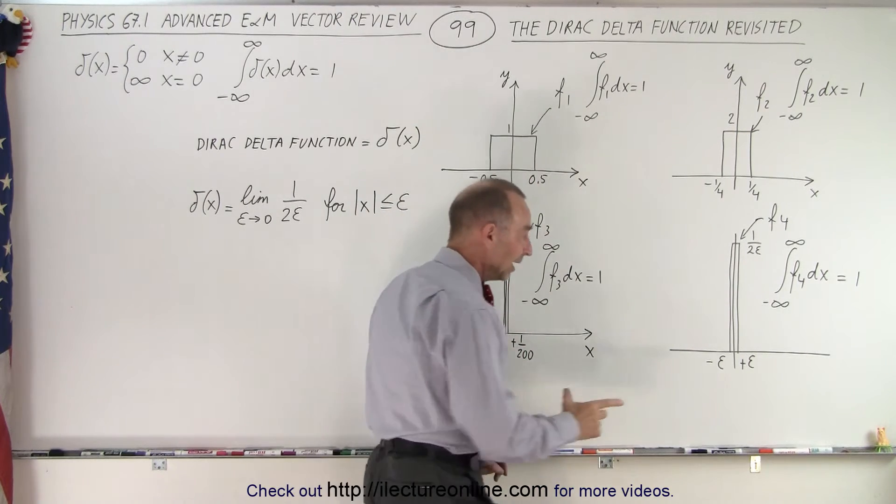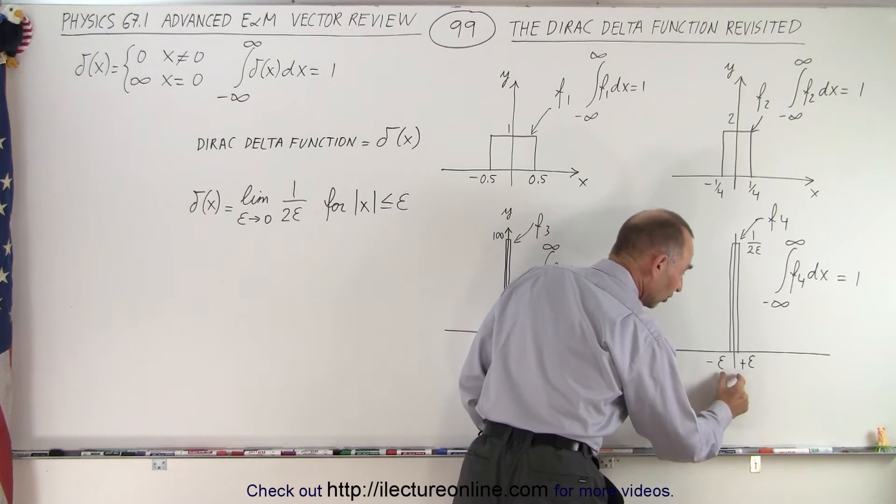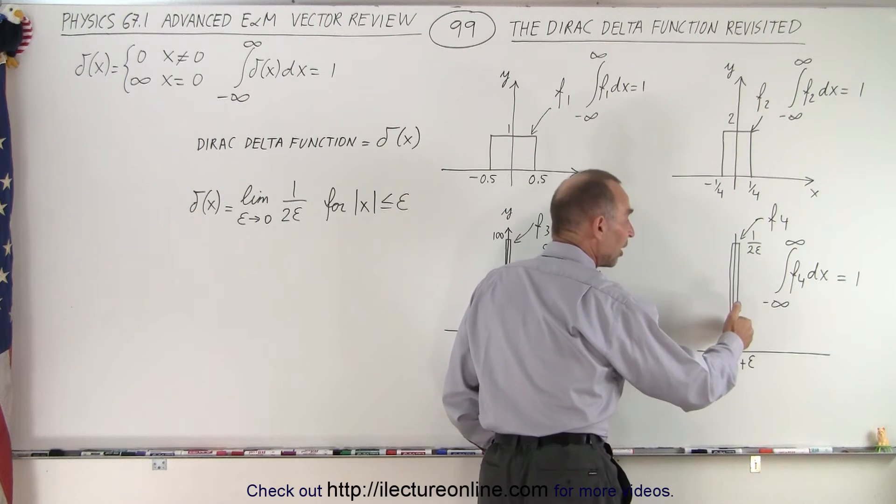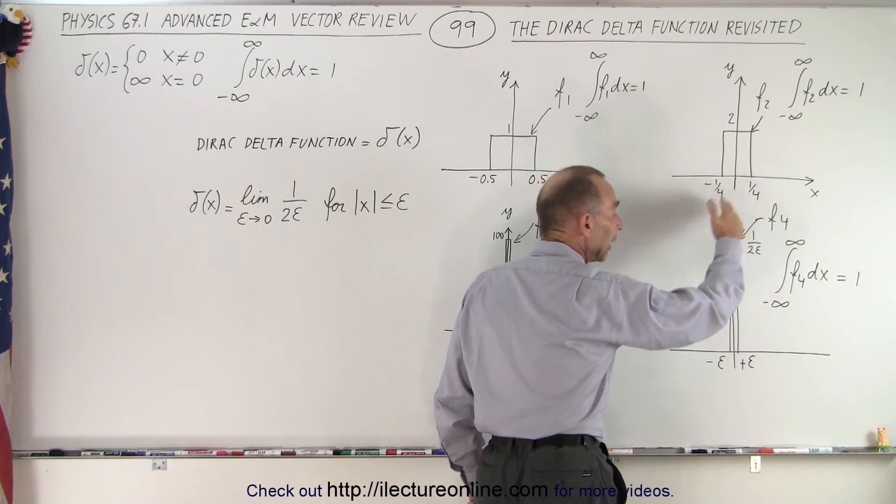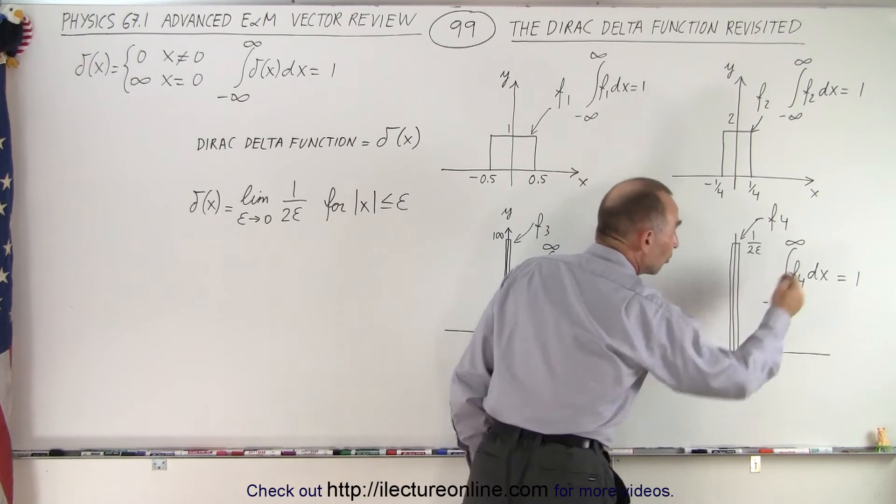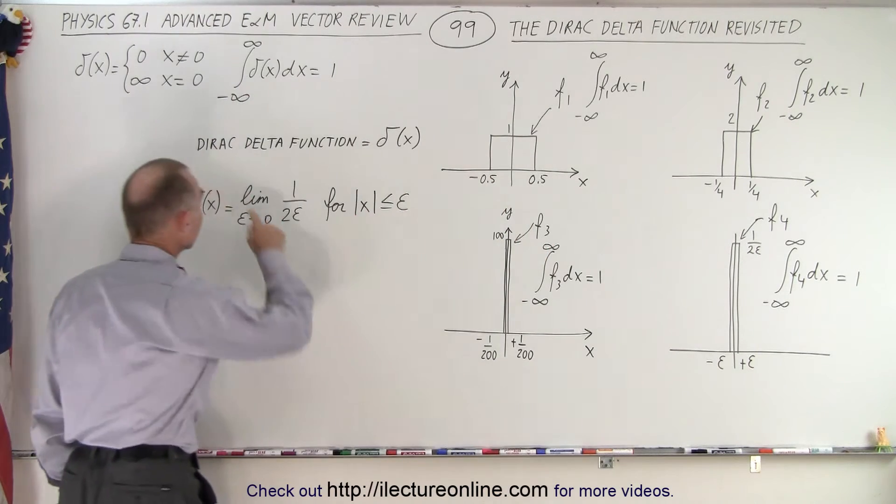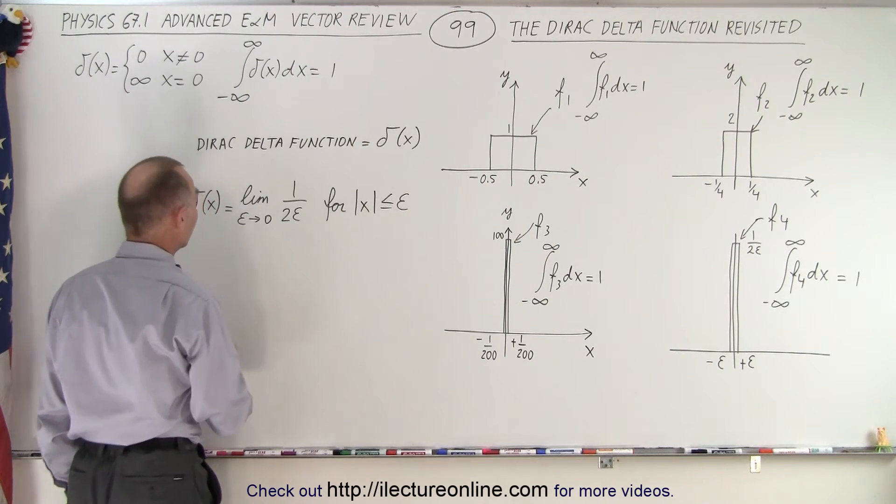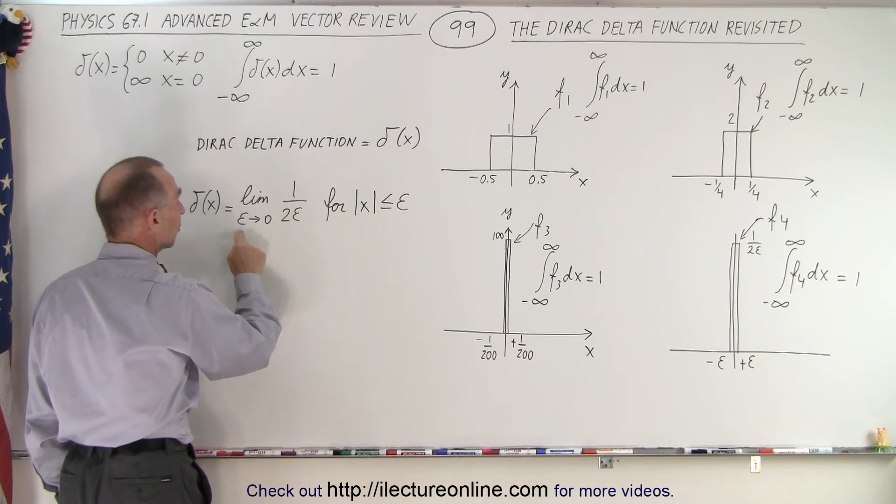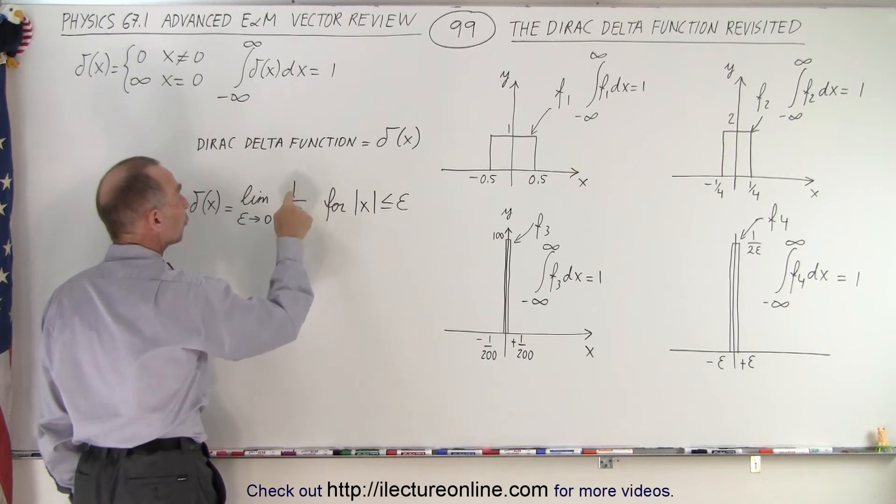So in the limit, if we let epsilon go to 0, then 1 over 2 epsilon will go to infinity, and the area of that function will still equal 1. So we can define the Dirac delta function, which is written like this, as the limit as epsilon goes to 0 of 1 over 2 epsilon.